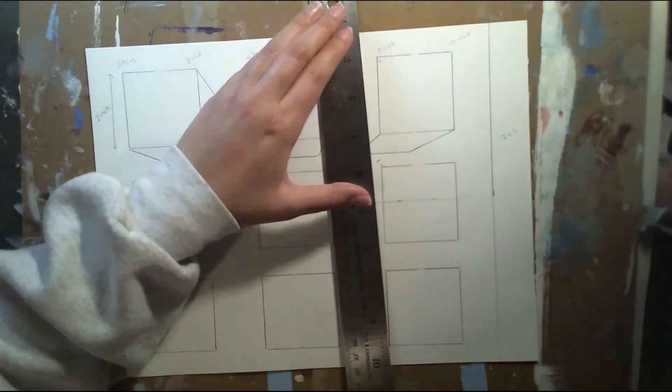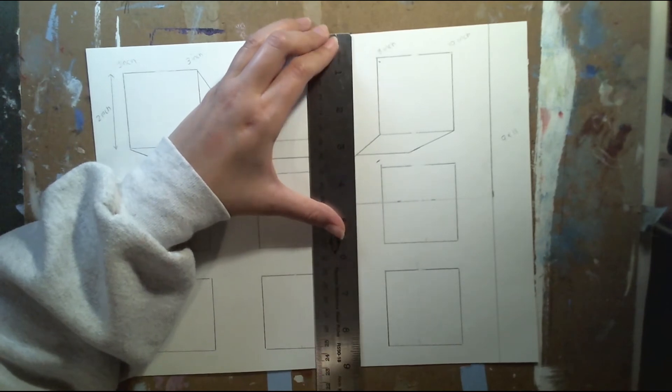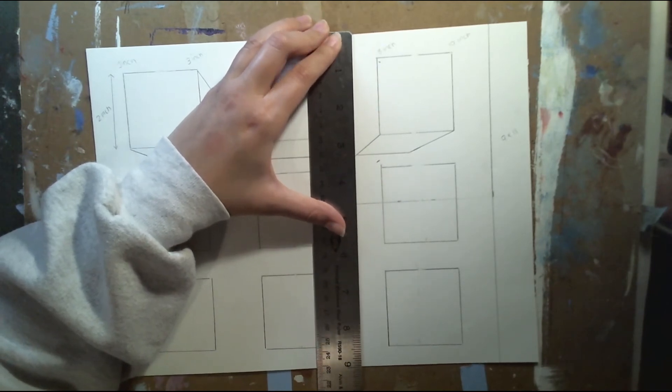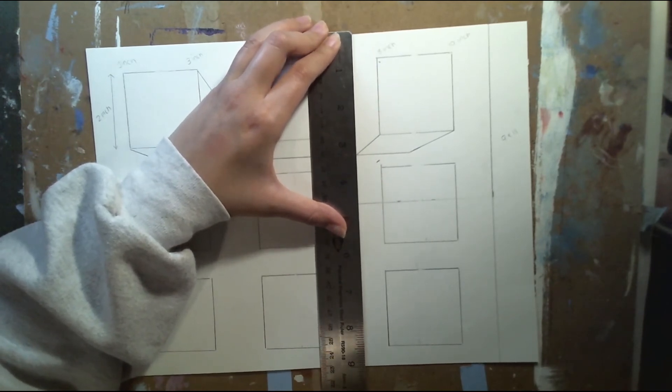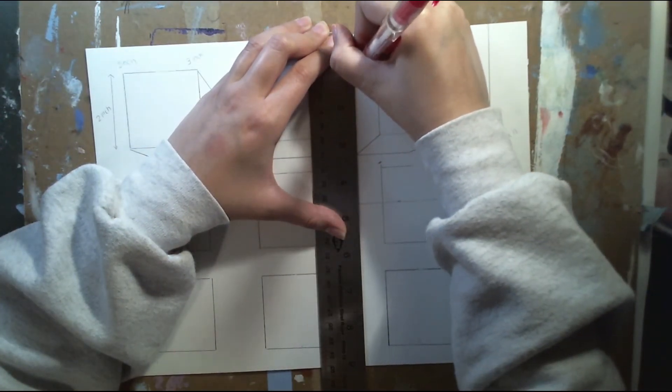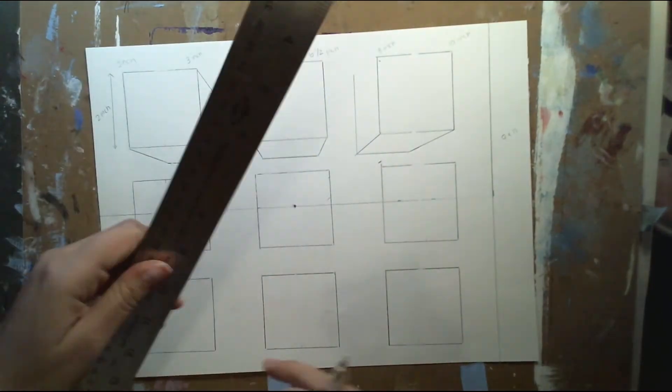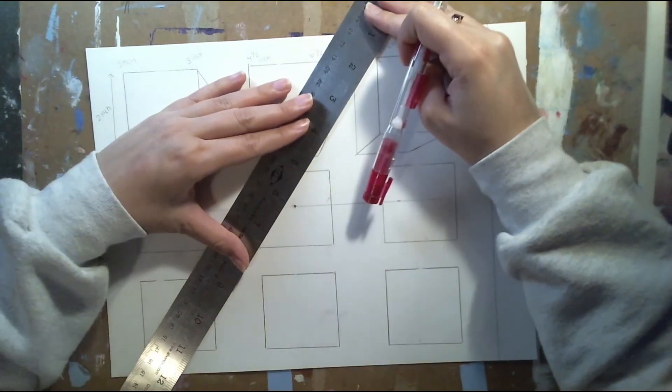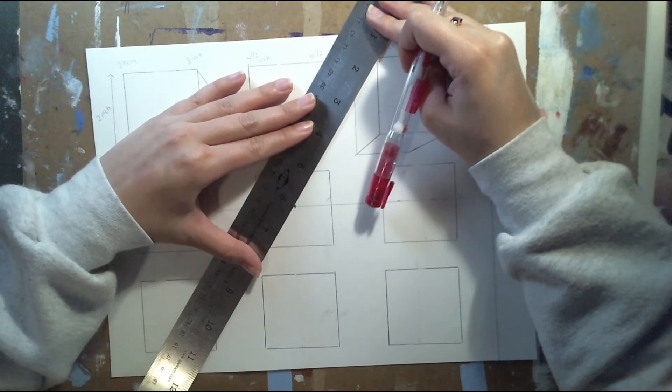Then now I'm gonna draw my vertical line to begin to close off my box and then I'm gonna draw my orthogonal line.